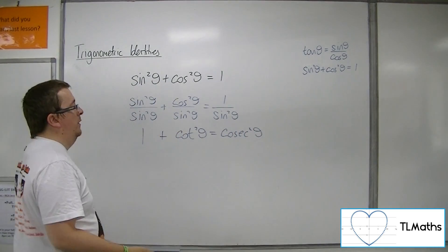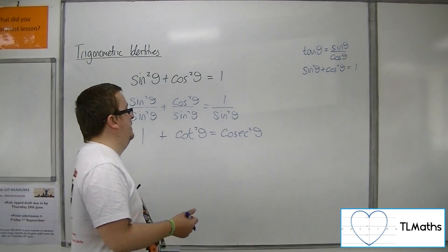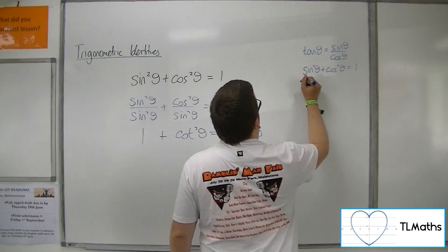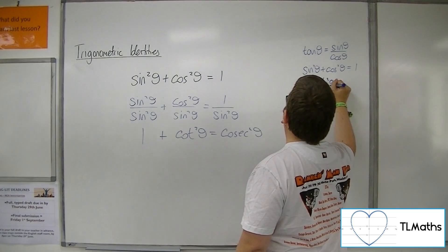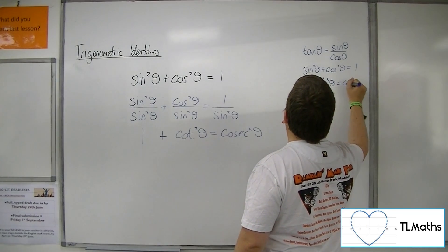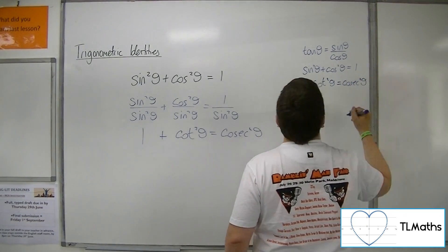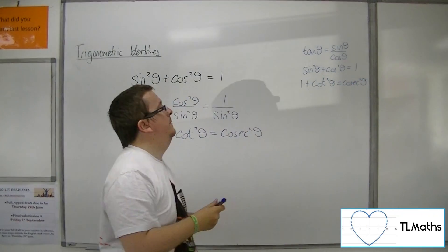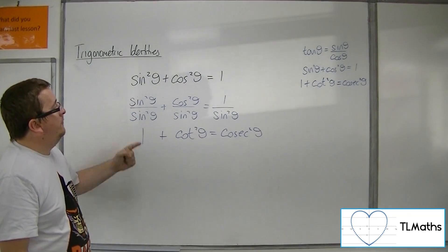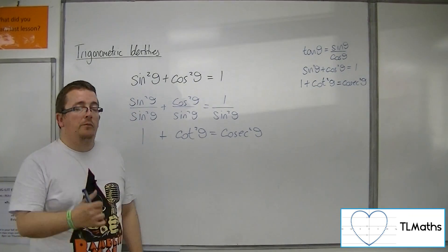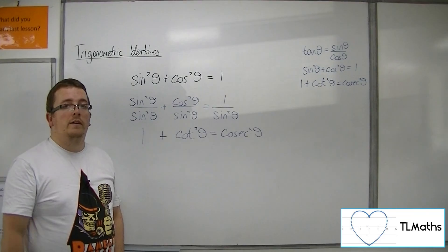So we now have a new identity: 1 plus cot squared theta equals cosec squared theta. And this can be derived straight from the sine squared plus cos squared equals 1 identity.